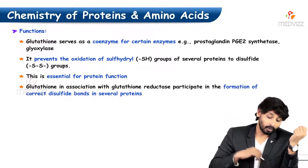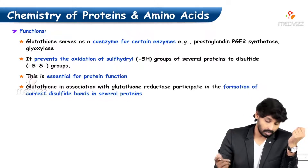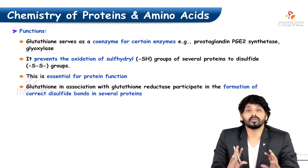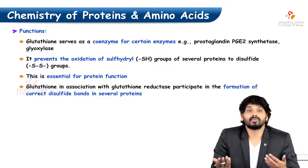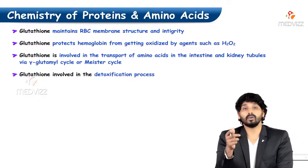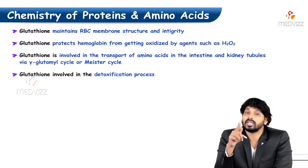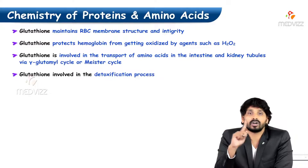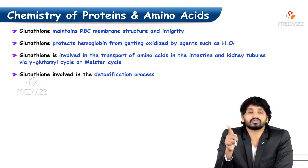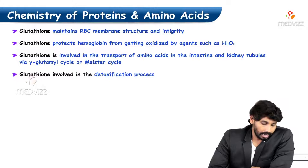The third function is protein function. Glutathione, in association with glutathione reductase, participates in the formation of correct disulfide bonds in several proteins. The main important function is that it maintains the integrity and shape of the RBC membrane. If the shape of the RBC is lost, it loses its function as well, so glutathione present in the RBC membrane is required to maintain this shape.